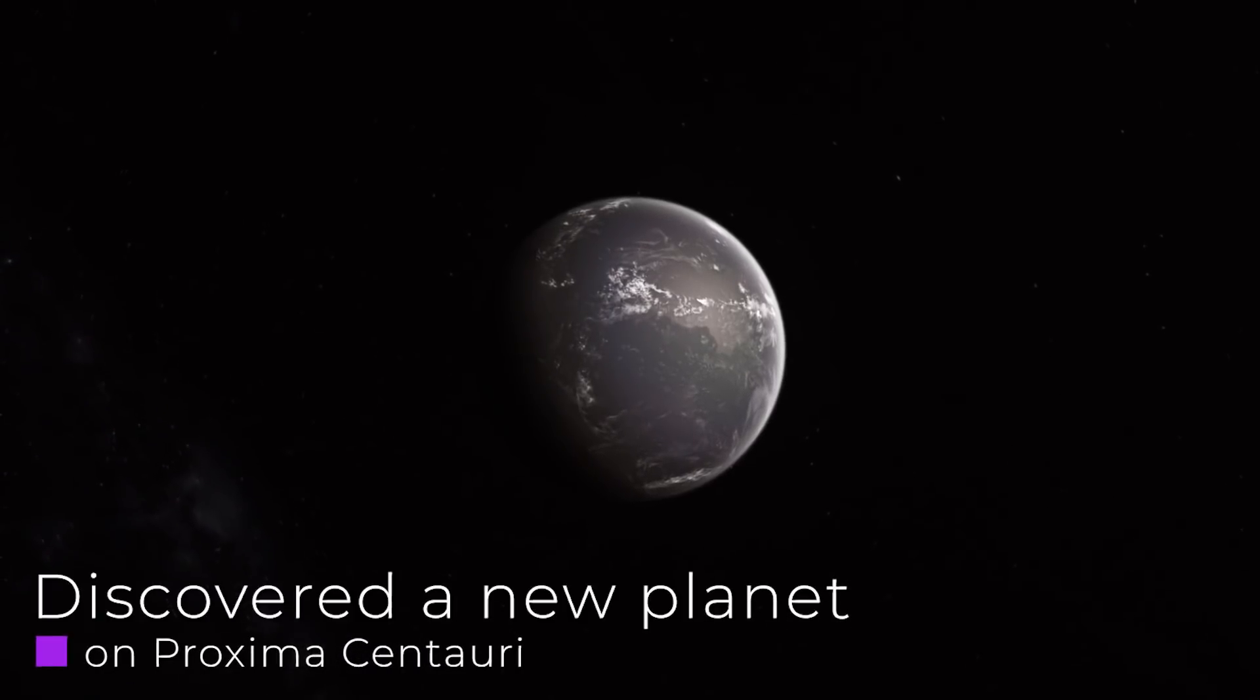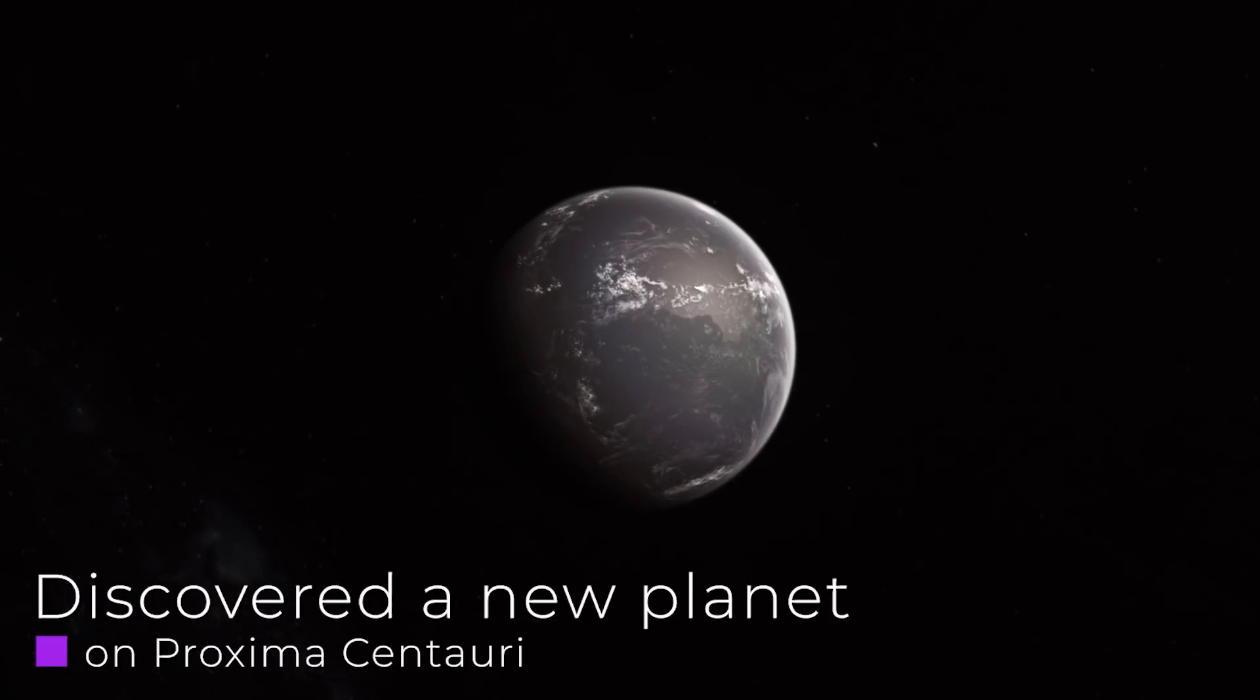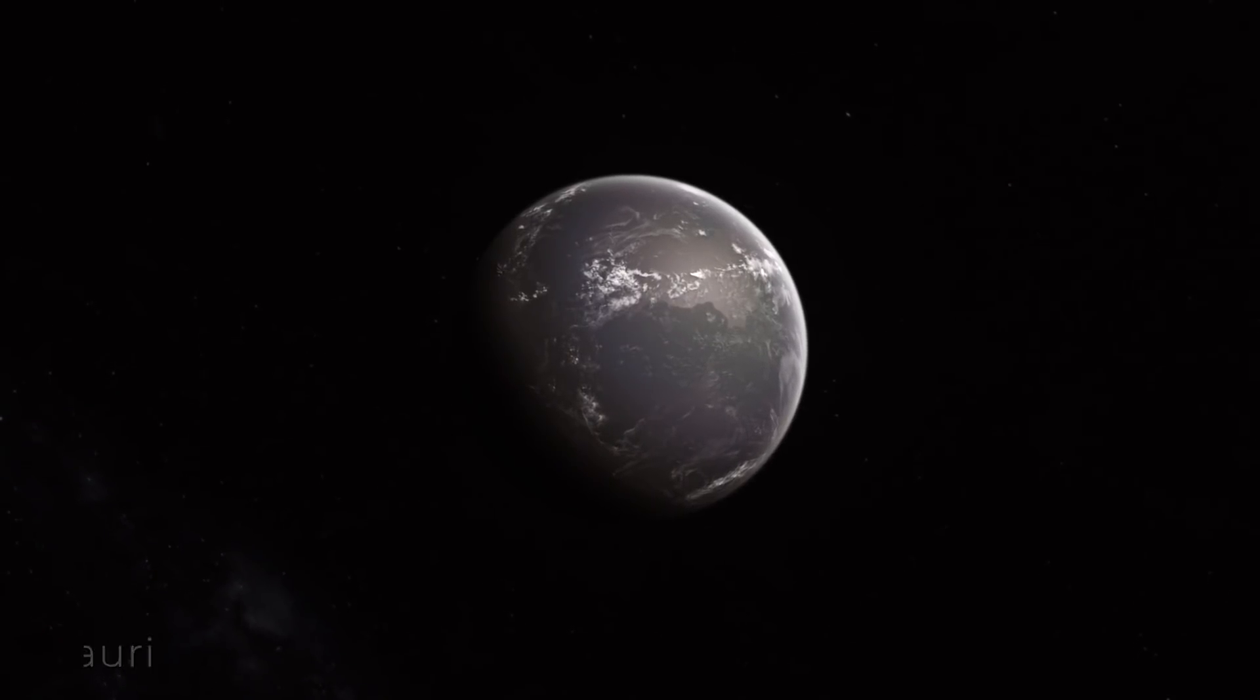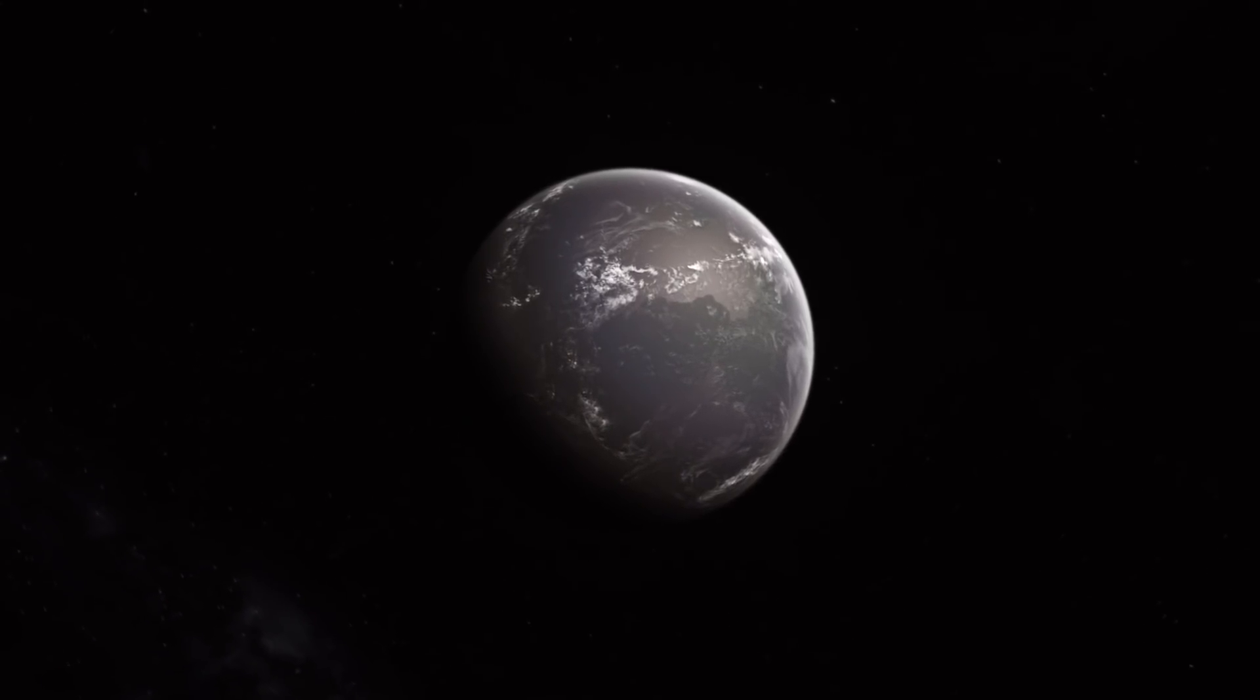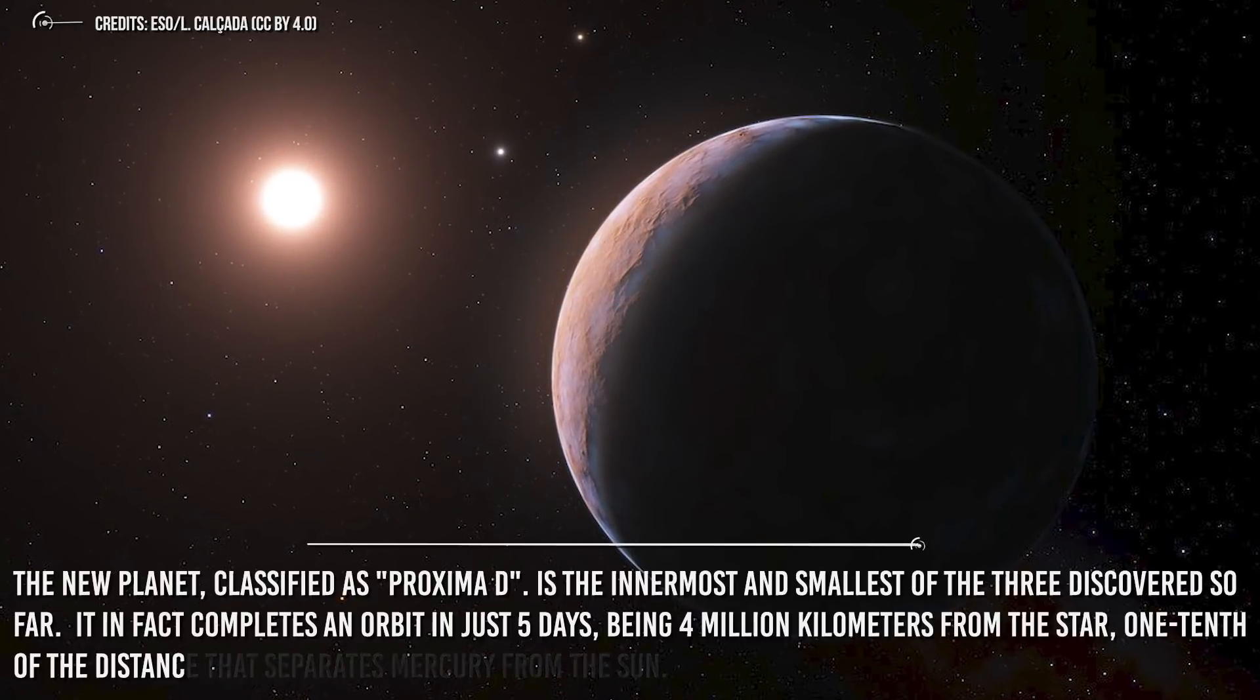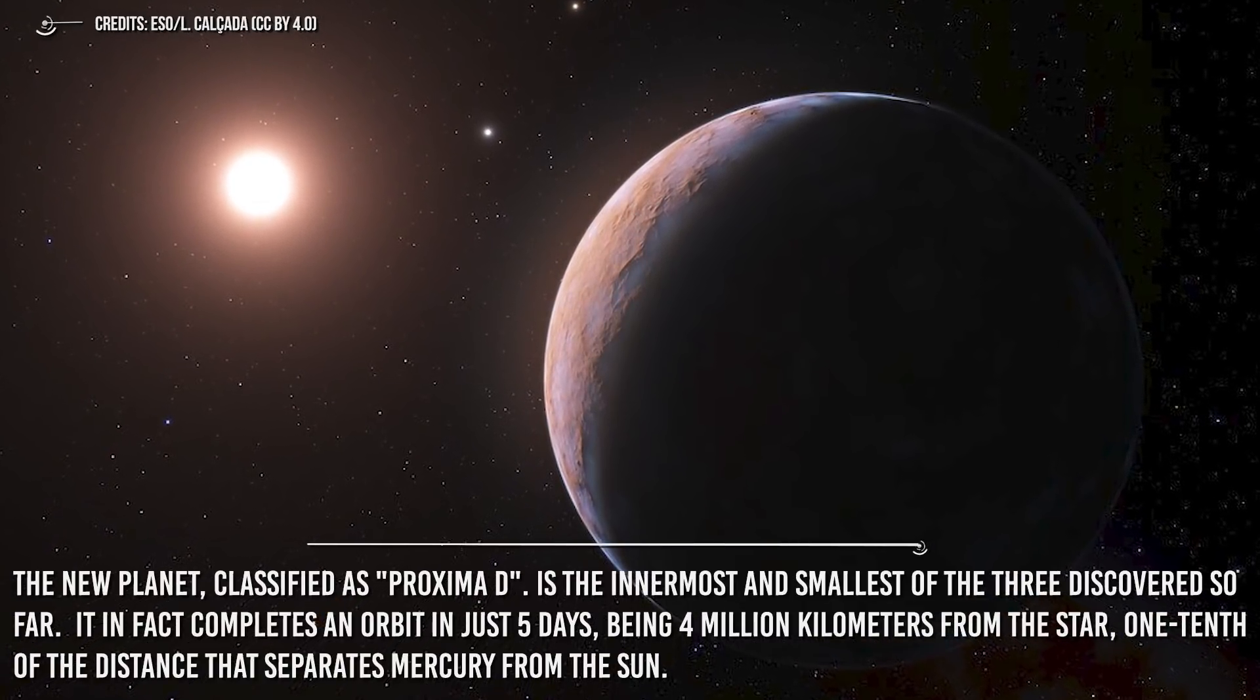Discovered a new planet on Proxima Centauri. A team of astronomers has identified a third planet in orbit around Proxima Centauri, the red dwarf that, with its 4.2 light-years away, is the closest star to us. The new planet, classified as Proxima D, is the innermost and smallest of the three discovered so far.